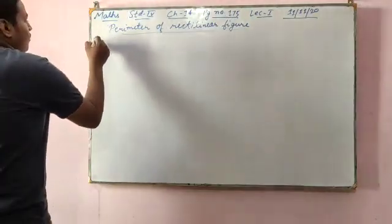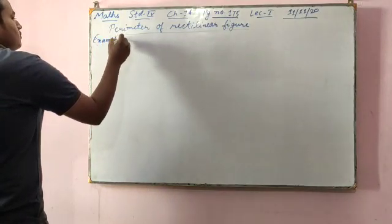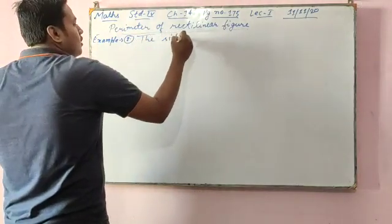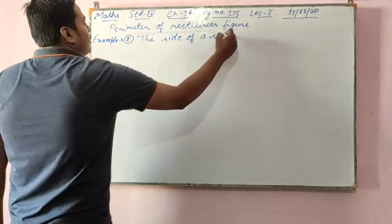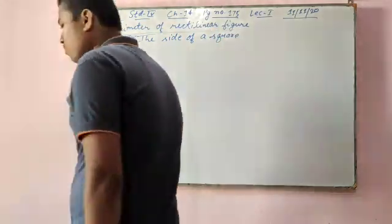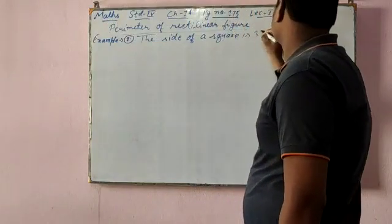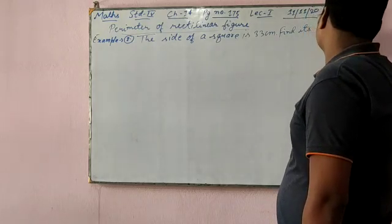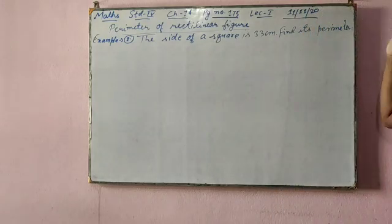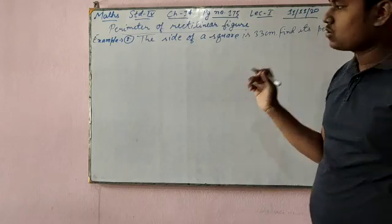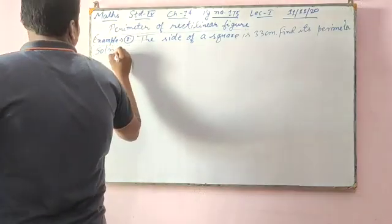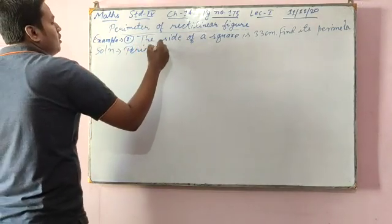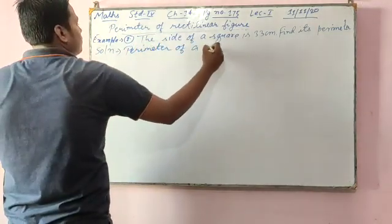So now come to example number 2, page number 175. This is example 2. Question is, the side of a square is 33 centimeter. Find its Perimeter. Okay? This is a question. The side of a square, we have to find its Perimeter. So come to solution.